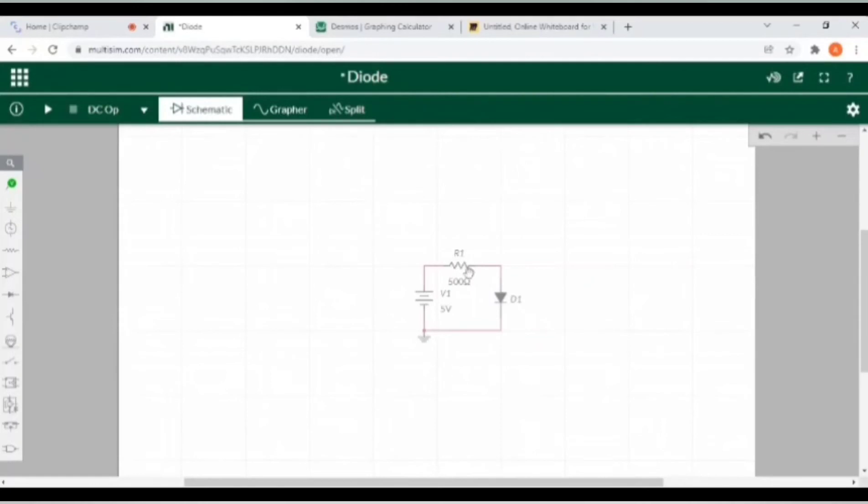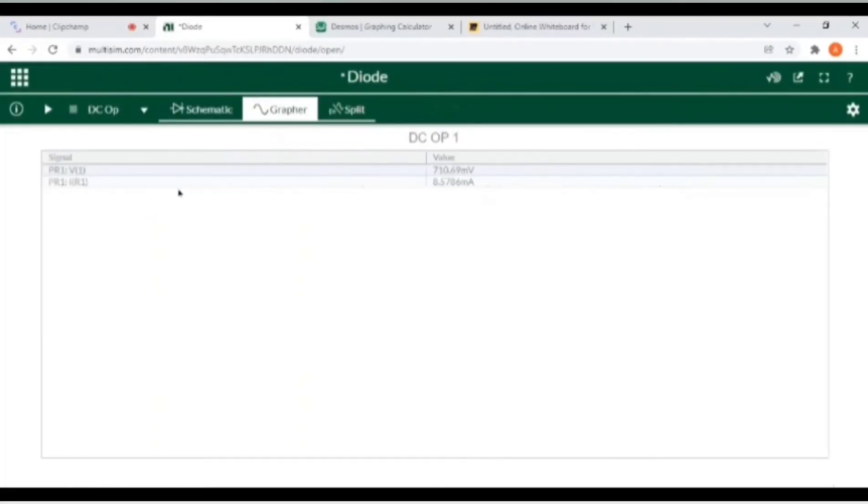And now come to the next example. In this example, I changed R1 value from thousand to five hundred ohms. Now simulate the circuit. This is DC operating point: 720 millivolts and 8.75 milliampere currents.